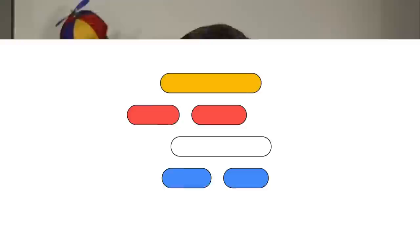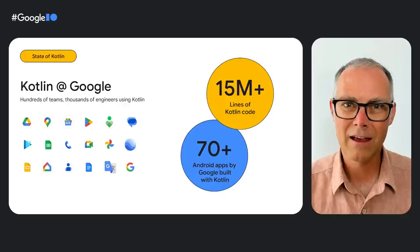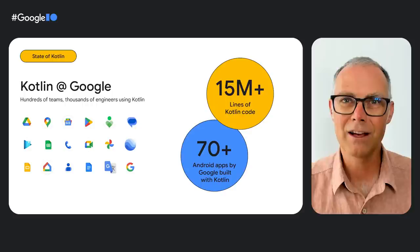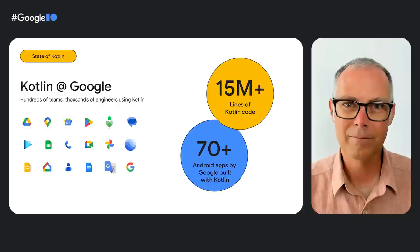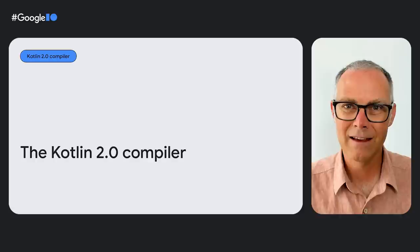At Google, we use Kotlin extensively ourselves. It's been generally available for Android projects in Google since 2019 and for server-side use since 2022, joining only four other fully supported server languages. Thousands of Google engineers write Kotlin, and we have more than 15 million lines of Kotlin code in our source control system, which so far has been doubling year over year. Most of our apps are written in Kotlin — we have over 70 Android apps using the language. We also participate in the Kotlin Foundation, funded together by JetBrains and Google, which ensures that the language evolves nicely, by reviewing new features and any potential breaking changes. We are happy to welcome three new Silver members to the Foundation this year: Gradle, Shopify, and TouchLab.